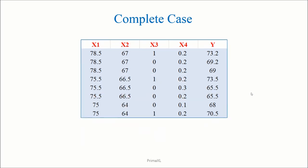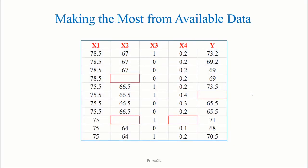Now, all the rows are complete, but the dataset is smaller in size than the original. Instead of just throwing away the incomplete rows, how about making the most out of what is available? So, we may want to fill the missing data by some reasonable criteria. This process is called imputation.